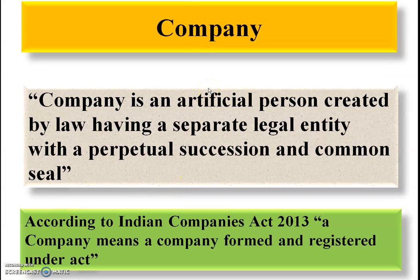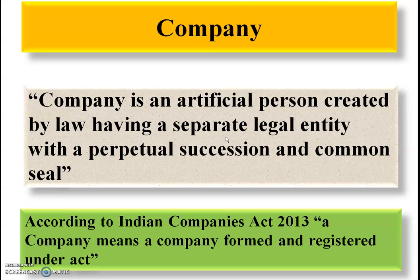Next, what do you mean by a company? A company is an artificial person created by law, having a separate legal entity with perpetual succession and a common seal. It is an artificial person because it is created by law — it is not a natural person. Separate legal entity means the company has a separate identity, different from its members or the people who are controlling it.